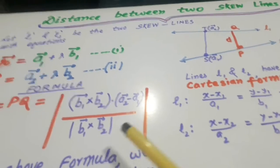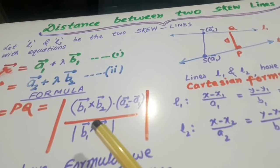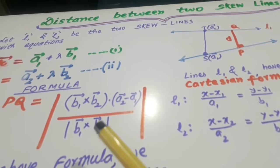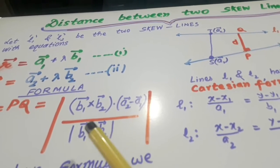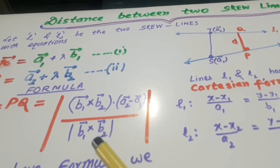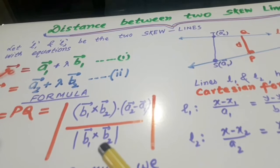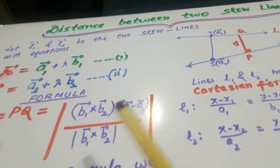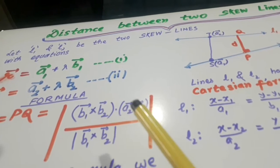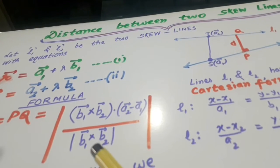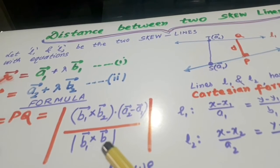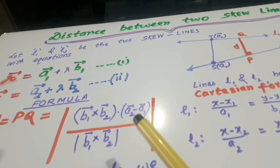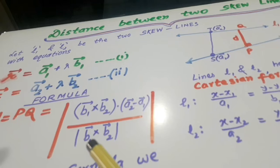So the formula is projection formula. This is projection of A2 minus A1 on B1 cross B2. So this is the magnitude of A2 minus A1 dot B1 cross B2 divided by magnitude of B1 cross B2. This is the formula.